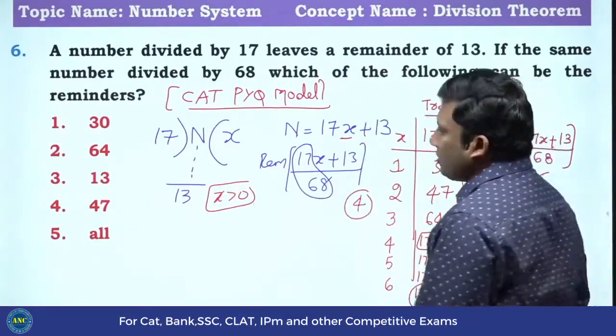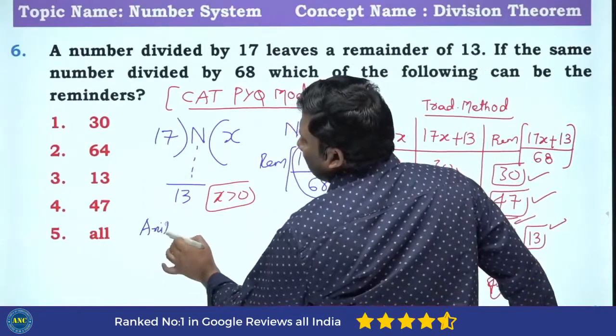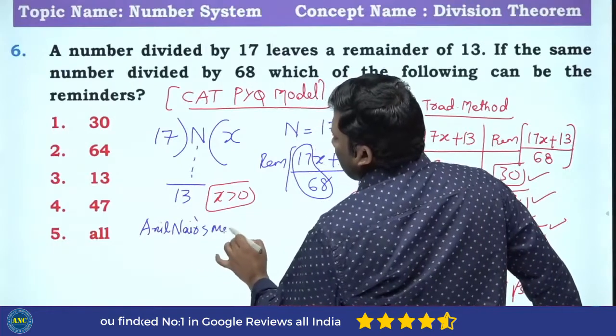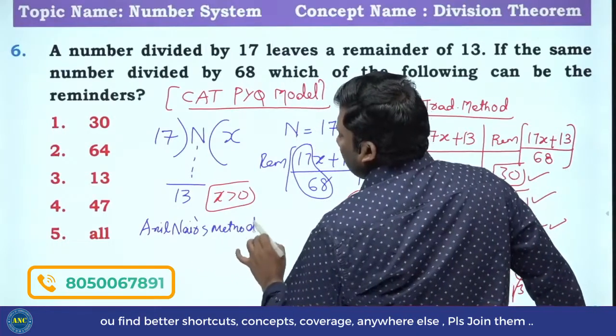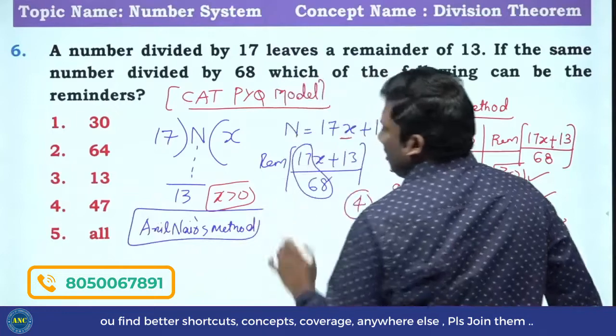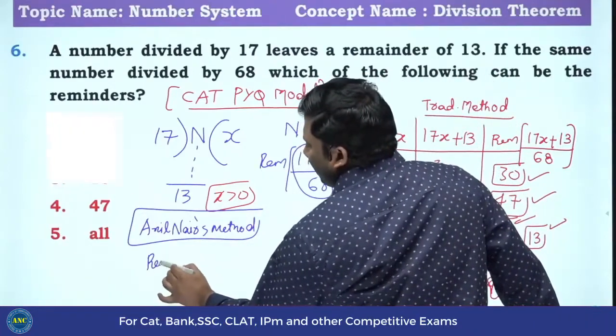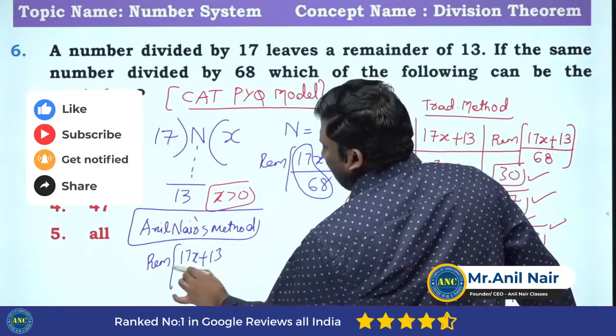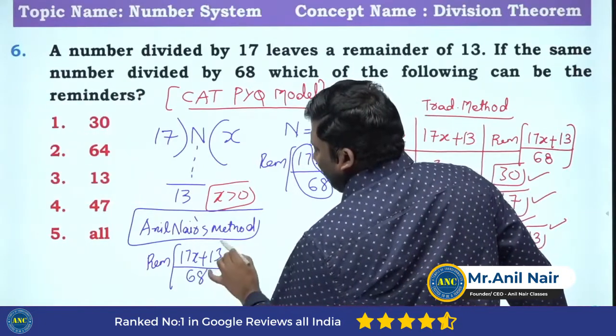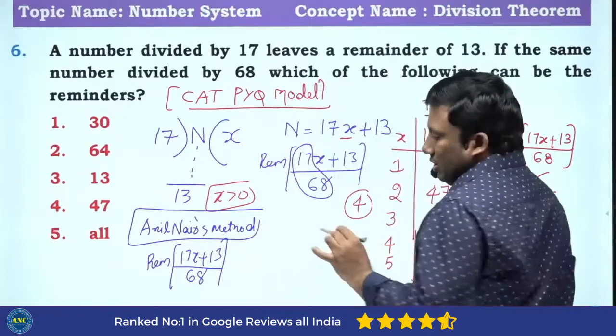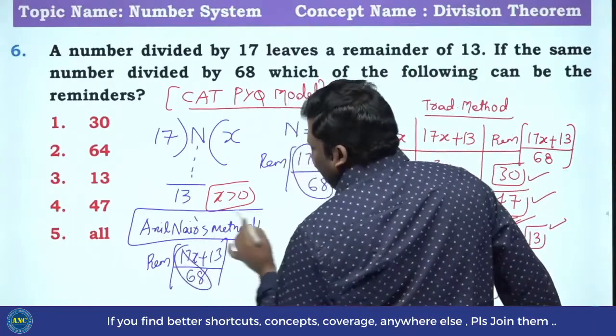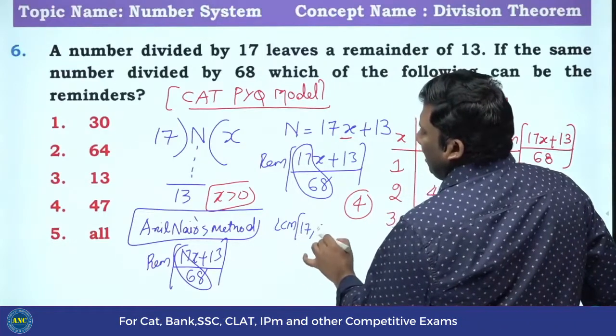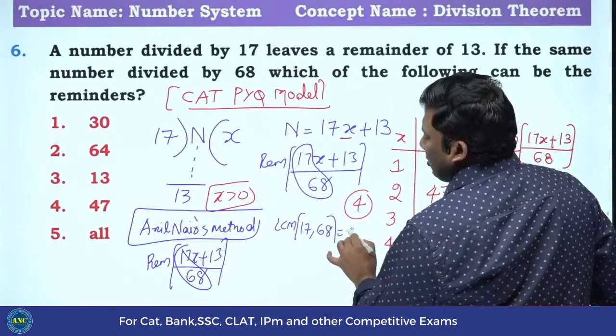Now listen carefully. Very very easy. Anil Nair's approach, Anil Nair's method. Directly I will get the answer. Anil Nair's method. Question is remainder, 17X plus 13 divided by 68. This is the question, right? 17 and 68, take the LCM. LCM of 17 and 68 is 68.